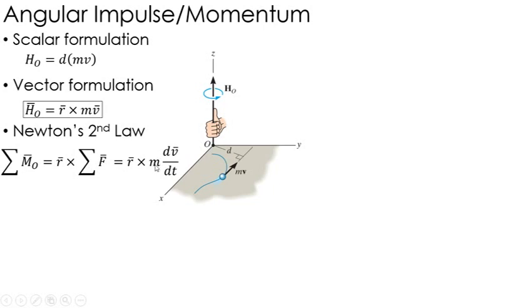That's what I know about A. It's the time derivative of velocity. So I can write the sum of the moments equals to the R cross M dv dt.